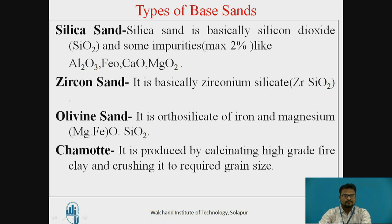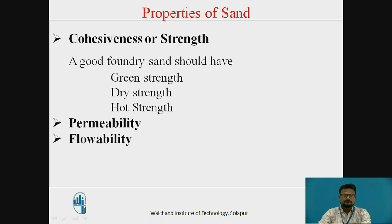Olivine sand is available in Norway. The next base sand is chamotte sand. It is produced by calcinating high-grade fire clay and crushing it to a required grain size. It is less expensive than zircon and olivine sand, and it has good thermal stability and high refractoriness.